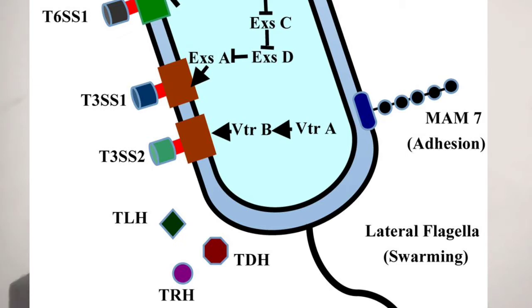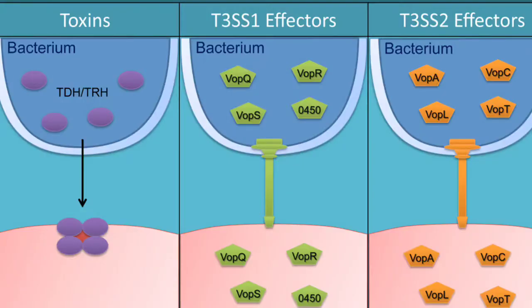Most Vibrio Parahemolyticus isolates from the environment are non-pathogenic. Only a few are pathogenic, exhibiting pathogenicity because they release certain proteins — TDH or TRH. These proteins are released by certain kinds of genes. TDH means thermostable direct hemolysin and TRH means thermostable relative hemolysin.